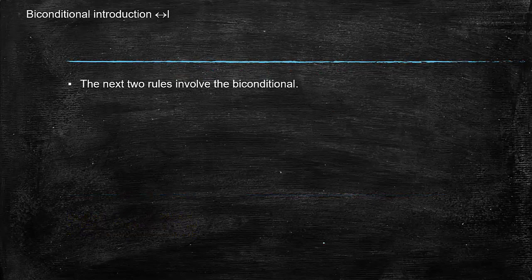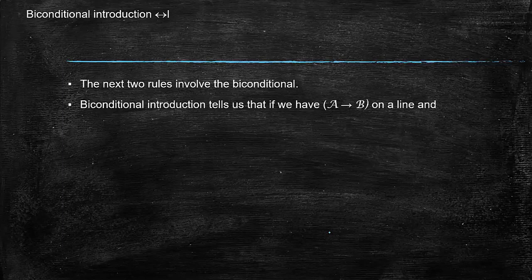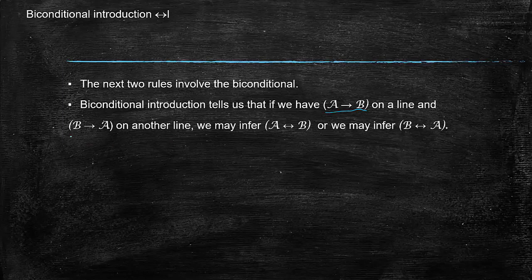Okay, so the next two rules involve the biconditional. Biconditional introduction tells us that if we have if A then B on a line and if B then A on another line, we may infer A if and only if B. Or we also may infer B if and only if A. So we can infer either one.